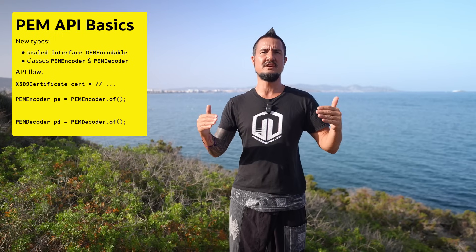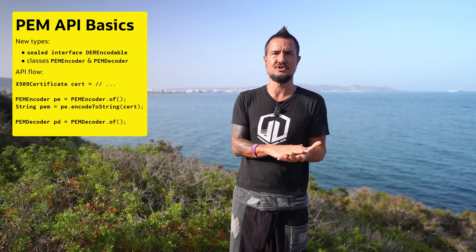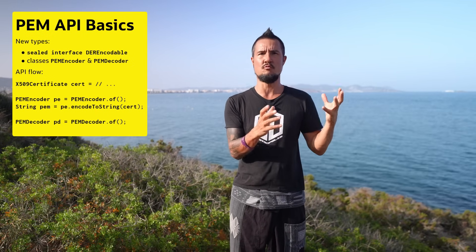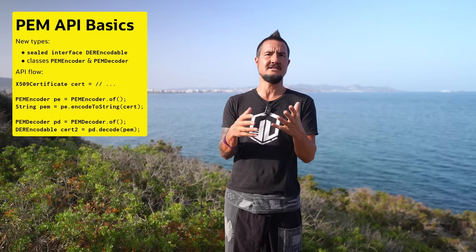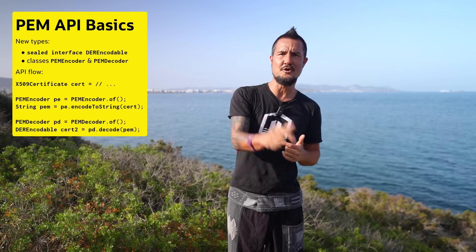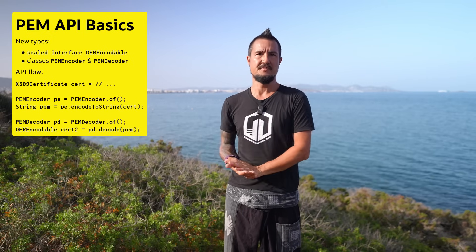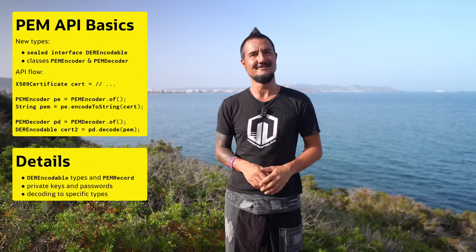Create an encoder or decoder with a respective static factory method. Call PEMEncoder.encode or encodeToString with a DEREncodable instance to get a PEM text as either an ISO-8859-1 byte array or as a string, and then call decode with a PEM text as a string or an ISO-8859-1 encoded input stream to get a DEREncodable instance back. There are, of course, a few details to consider that we'll go over now.